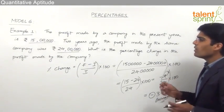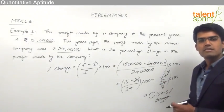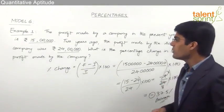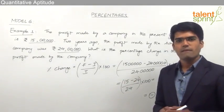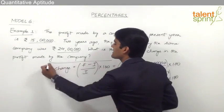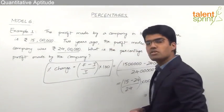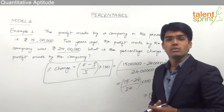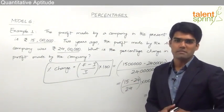So this is how we can simply use the formula — final minus initial by initial into 100 — to find out the percentage change between two values. Remember that the concept of percentage change is very frequently used when we solve questions from data interpretation.